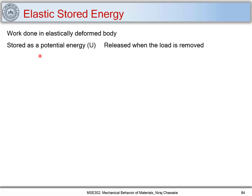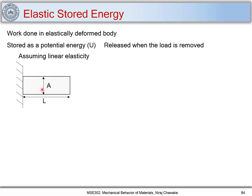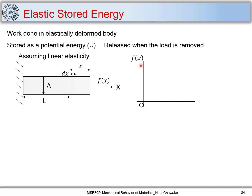Assuming linear elasticity, consider a member hinged at one end with cross-sectional area A and length L. This member is subjected to a uniaxial force along the x-direction and extends by a small length dx. Under the complete force it extends to a distance x, and we can plot F(x) versus x. Since the material deforms linearly elastically, a force F is needed to deform the material to displacement x.